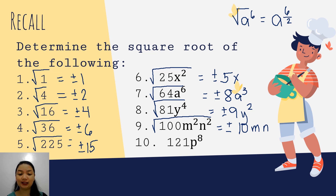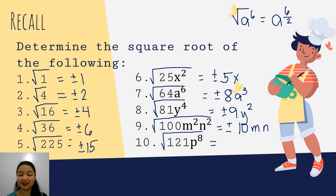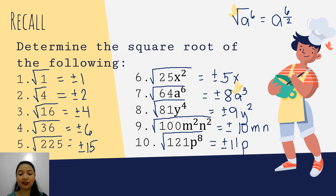And then for our last review, we have 121p to the 8th. The square root of 121 is 11. For p to the 8th, similar to before, we divide 8 by 2, giving us p to the 4th. So we have positive, negative 11p to the 4th power. That is how we get the square root of a term.